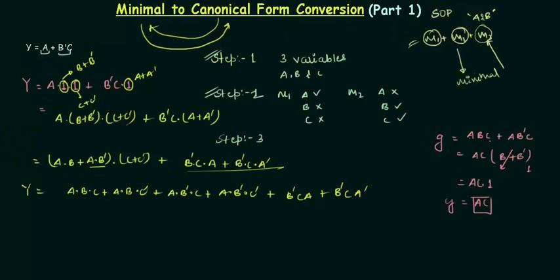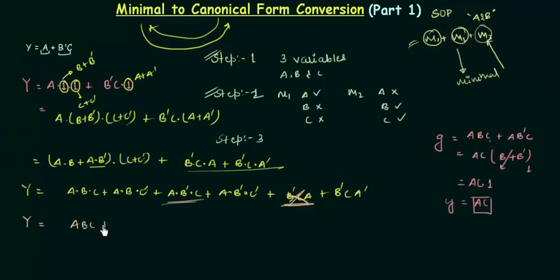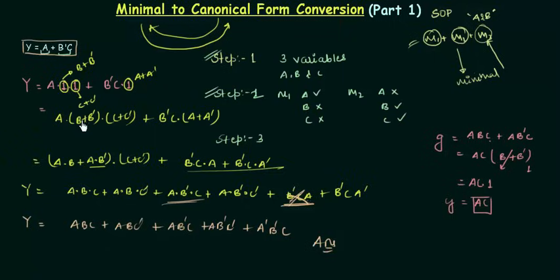This is not the final answer yet — you have to confirm none of the min terms is repeated. ABC is not repeated. ABC' is not repeated. AB'C appears here and also again from the expansion, so one instance is redundant and we remove it. AB'C' is not repeated. So the final function Y equals ABC + ABC' + AB'C + AB'C' + A'B'C. This is the answer when you convert this minimal SOP form to the canonical SOP form.